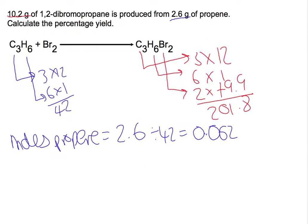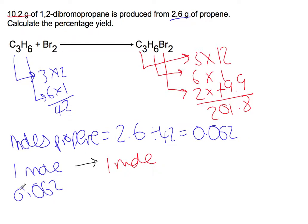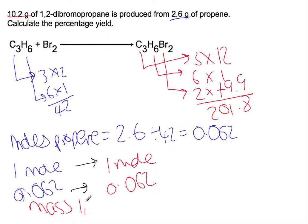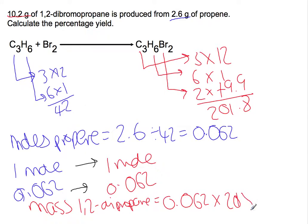That then allows us to calculate the moles of 1,2-dibromopropane. We have a 1 mole of reactant to 1 mole of product ratio here. So that means if we've used 0.062 moles of our reactant, we should have produced 0.062 moles of the product. We can now calculate the mass of 1,2-dibromopropane that we should have produced, had the reaction gone 100% perfectly. That's going to be 0.062 moles multiplied by the gram formula mass of 201.8, so we should have produced 12.5116 grams.